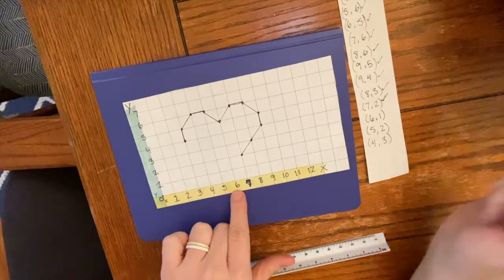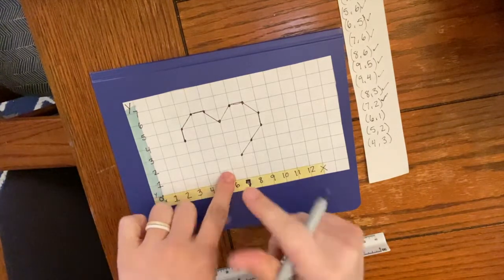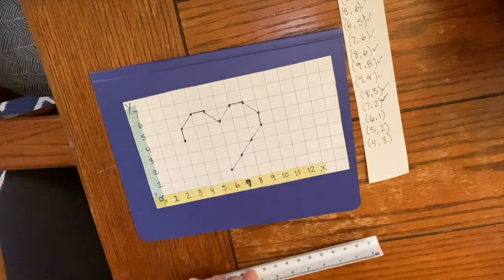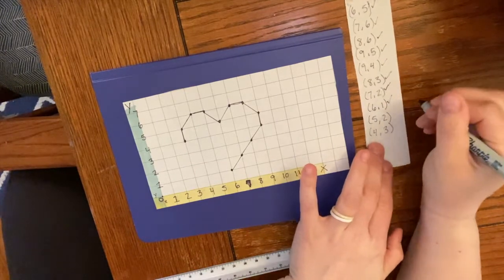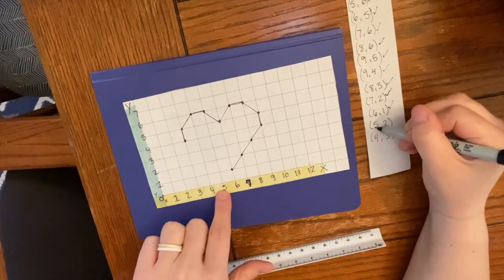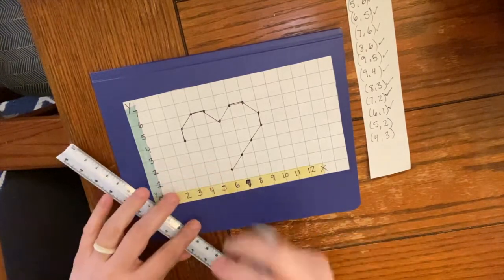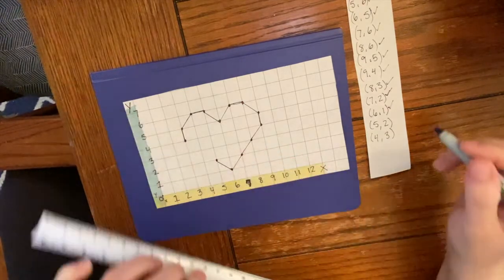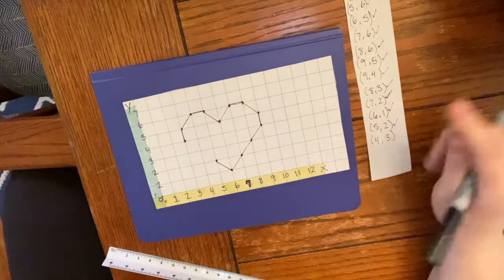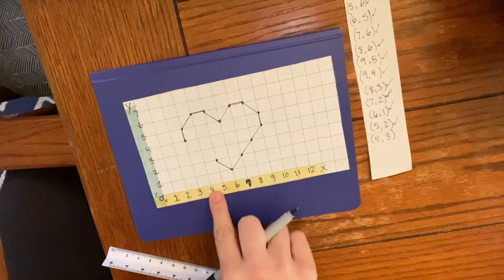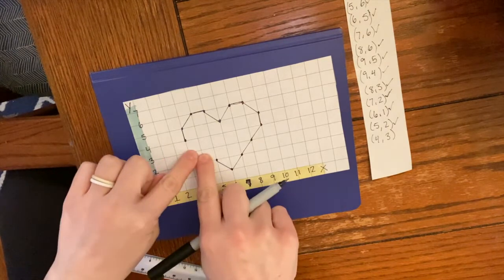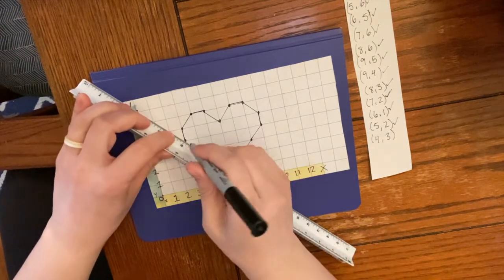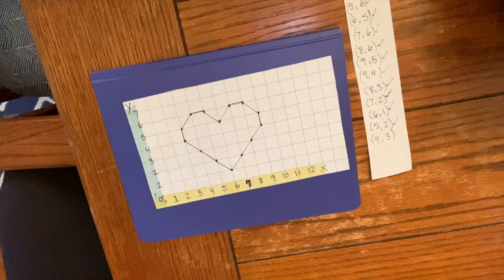7 on the x-axis and 2 on the y. What do you guys think it looks like so far? I think I know what it is but I'm not gonna say yet. Here's 6 and 1 on the y-axis. Oh I bet you all definitely know what it is now. 5 x and 2 y, it's right there. Let's see what do you guys think? And then 4 on the x-axis and 3 on the y.